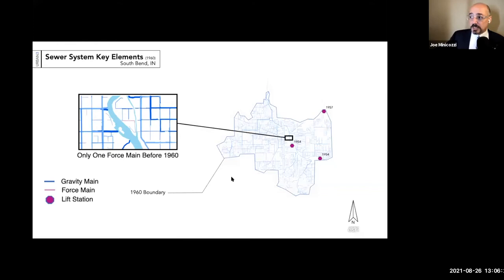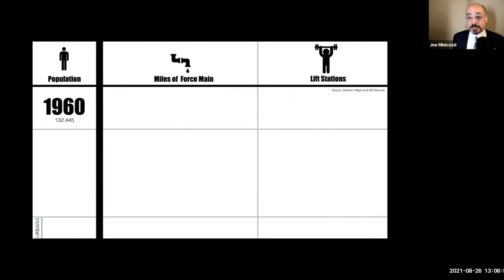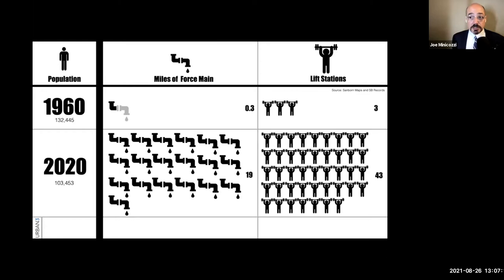In pink, you can see in 1960 they had about two and a half blocks of forced main and three lift stations. What they've grown to now — and remember they have less population today than they had in 1960 — is a massive amount of forced mains and lift stations. They're adding all of this infrastructure and not adding people, so that cost per person is going to get really high. In 1960, they had 132,000 people with not even three-tenths of a mile of forced main and three lift stations. Their population now is 103,000 — a 22% decline since 1960, but a 6,000 and 1,000% increase in infrastructure.